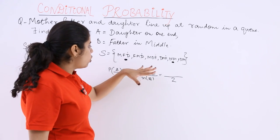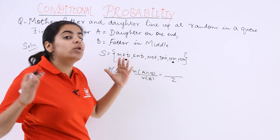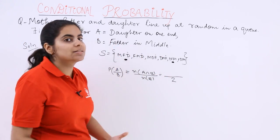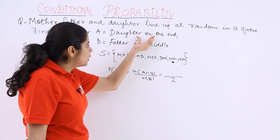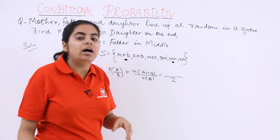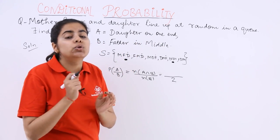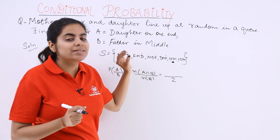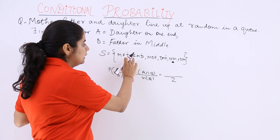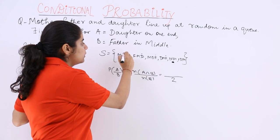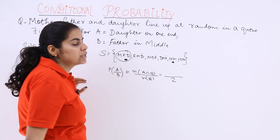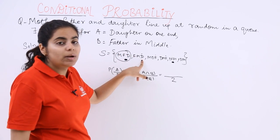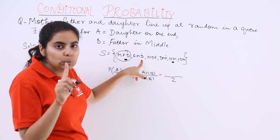Now next. N(A∩B) means both the things, both A and B should occur simultaneously. The daughter should be on one end and the father should also be in the middle. So those events in which the daughter is on one end. Here the daughter is on one end and the father is in middle. This is the first case. Here daughter is on the one end but father is not in the middle. Don't take this.